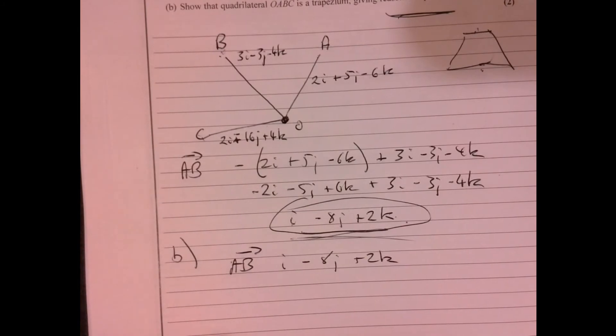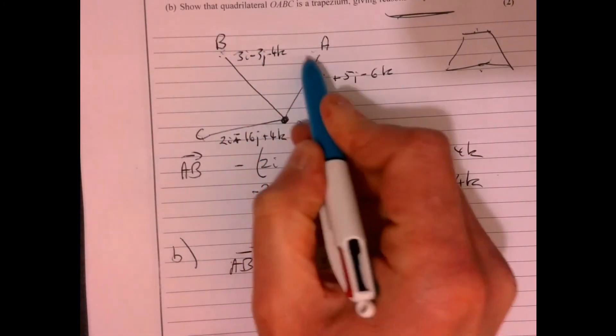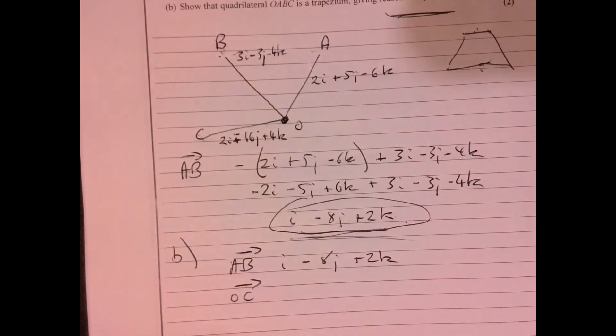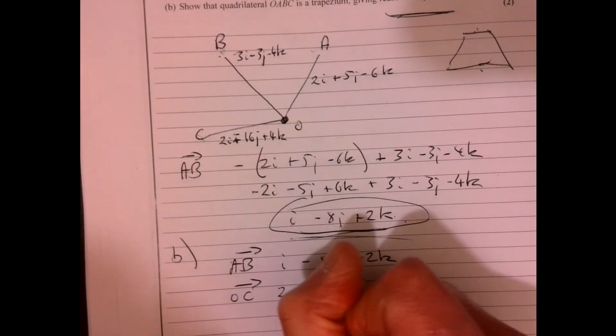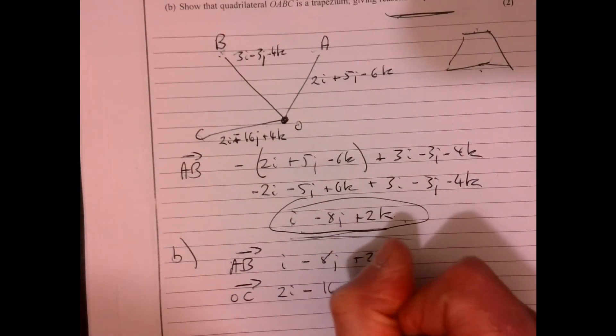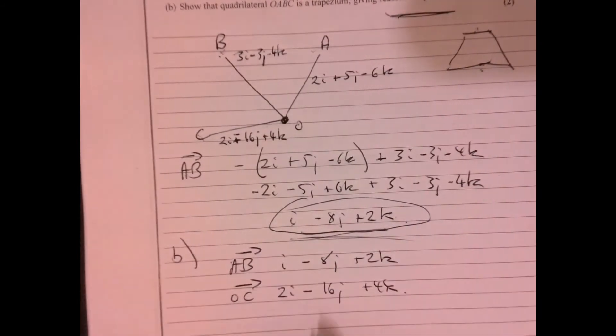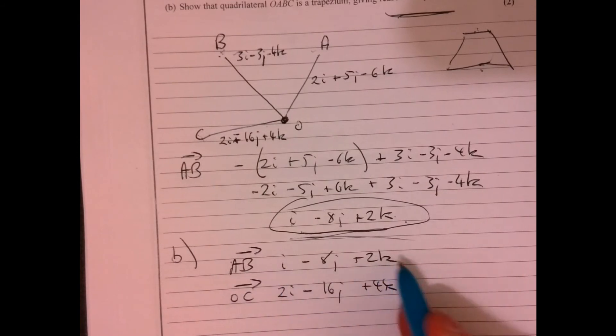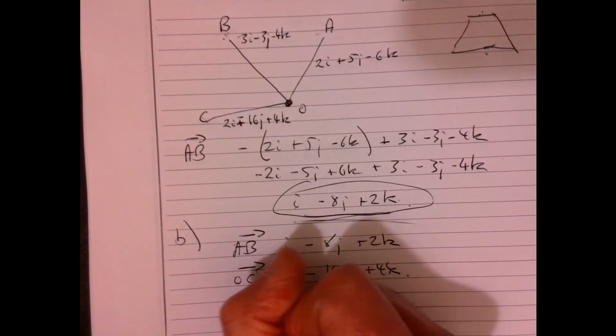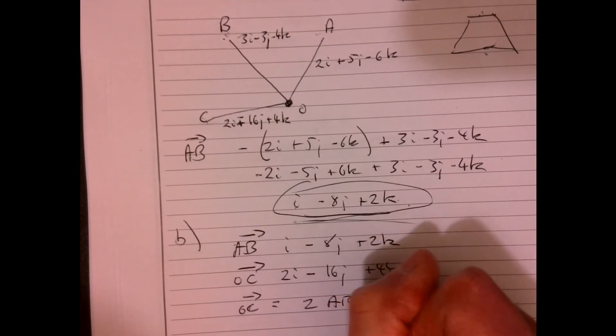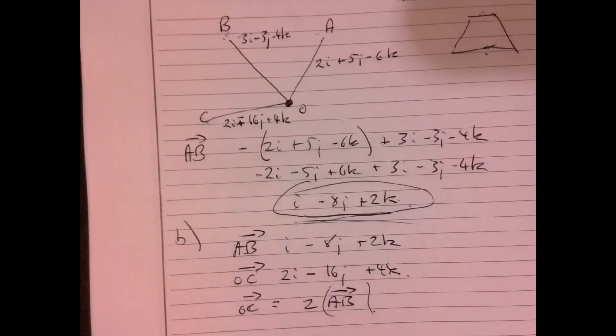Now think about the one that's opposite to that. So there's AB, so OC. OC is 2i. And if you just write them one above the other, hopefully you'll just see - look, this one's twice as big as that one. So if I now write OC equals two lots of AB, therefore...